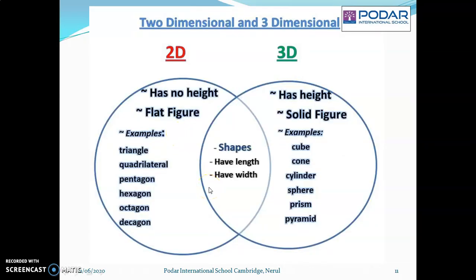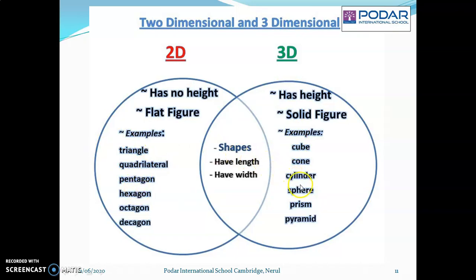Here is a Venn diagram to show the differences and the similarities of 2D shapes and 3D shapes. The similarities: they both have the length and the width. The differences are: a 2D shape has no height, and a 3D shape has height. A 2D shape is a flat figure whereas a 3D shape is a solid figure. Examples: triangle, quadrilateral, pentagon, hexagon, octagon are all 2D shapes. Cube, cone, cylinder, sphere, prism, pyramid are all 3D shapes.